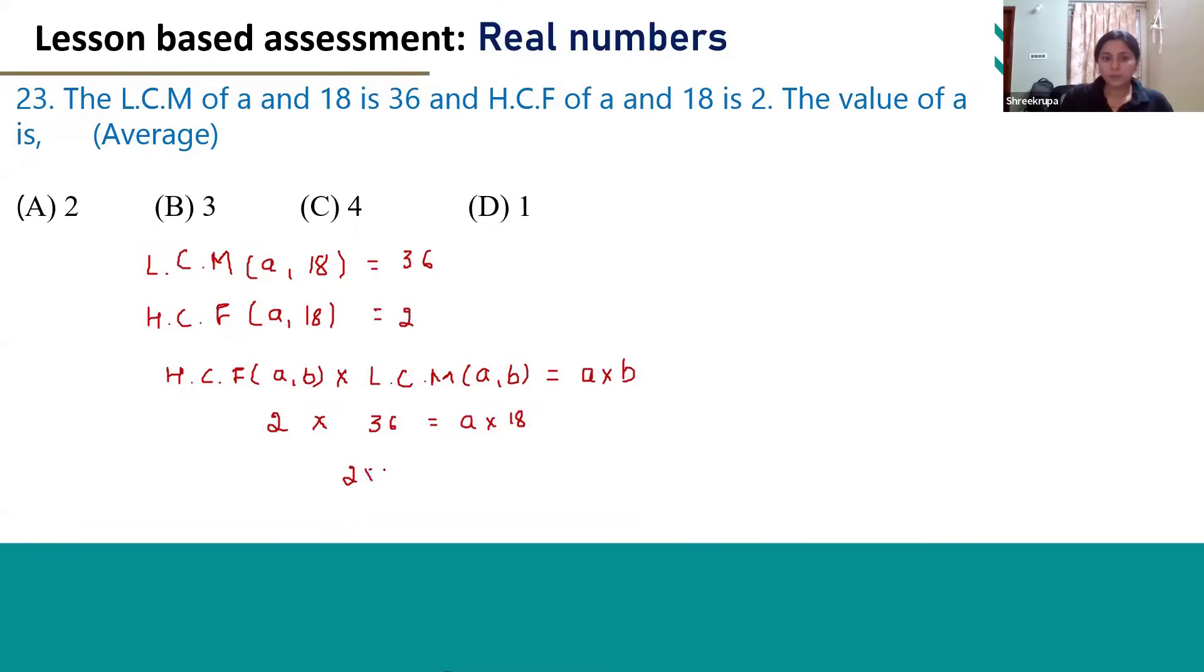it will become 2 into 36 divided by 18. 18 ones are 18 twos are 36. So, the answer will become A is equal to 4. So, the correct answer is option C, 4.